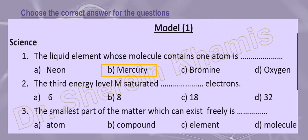So the third energy level M is saturated by 18 electrons. Applying the rule 2n² to the fourth energy level: 2 × 4² = 32 electrons. So K is saturated with 2, L with 8, M with 18, and N with 32 electrons. Let's go to question number three.